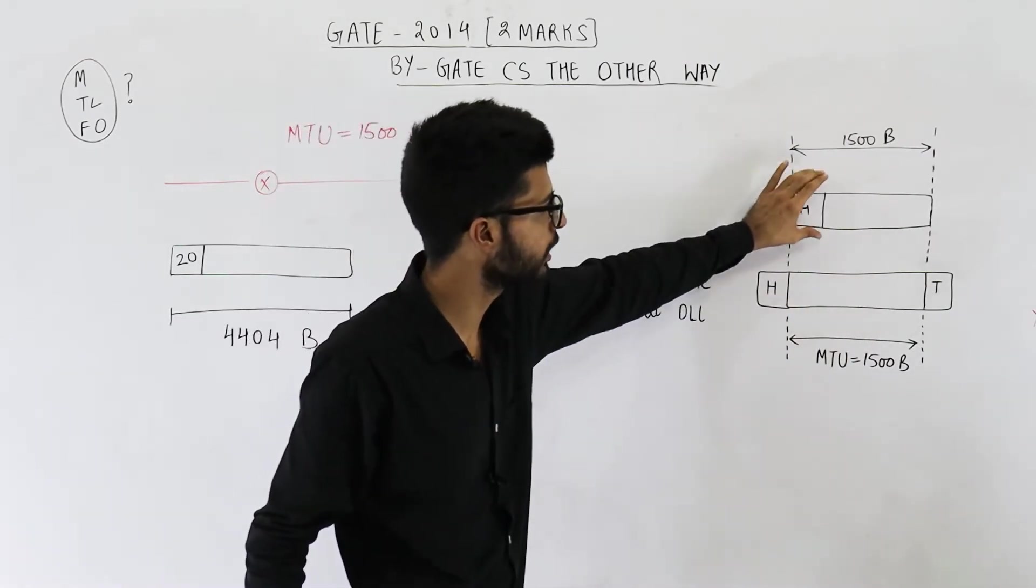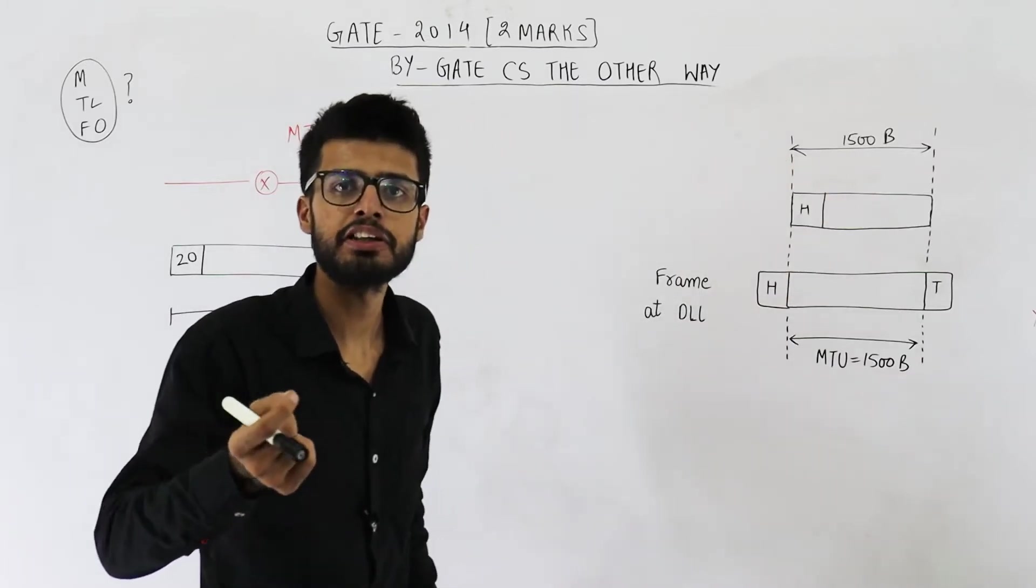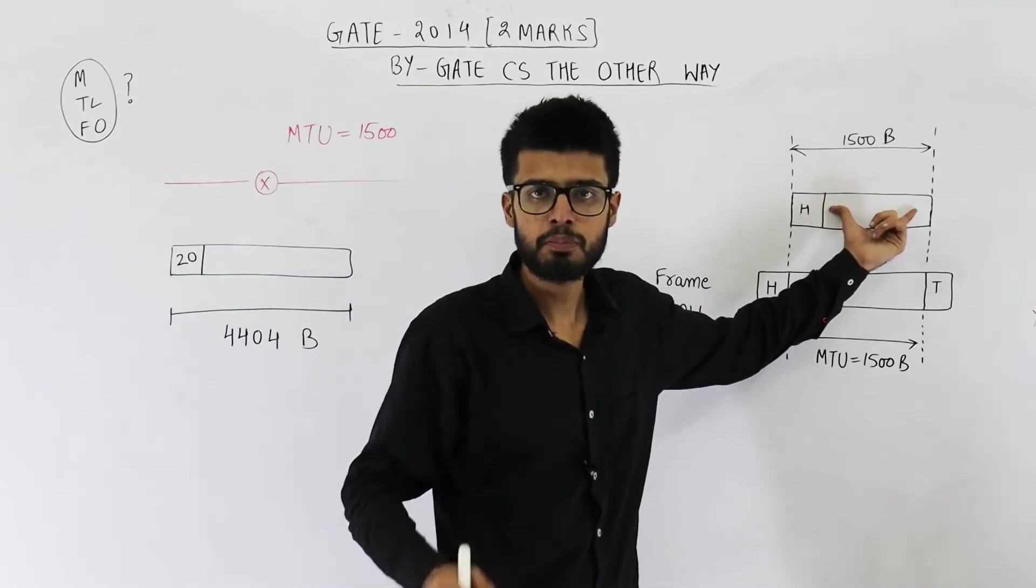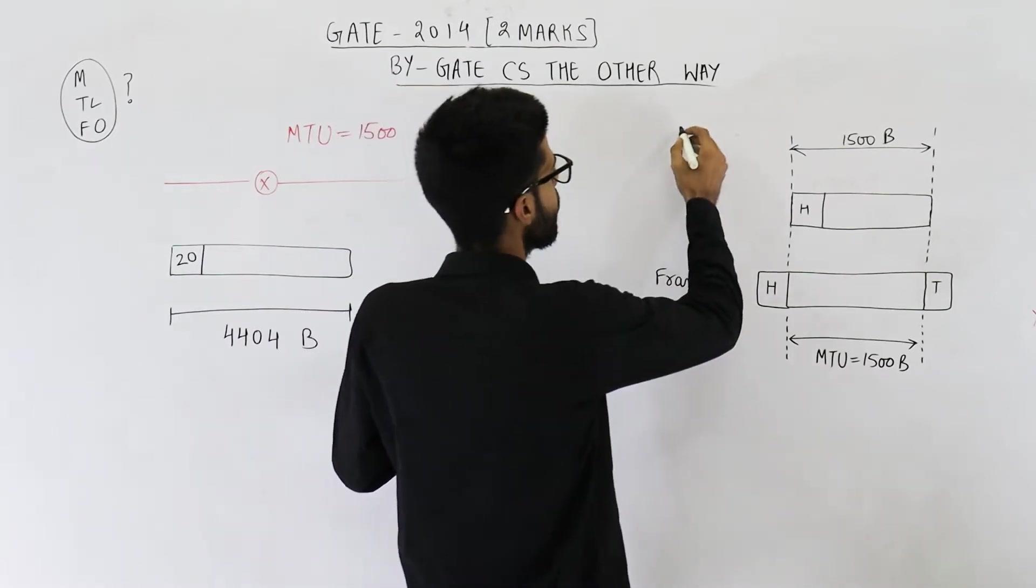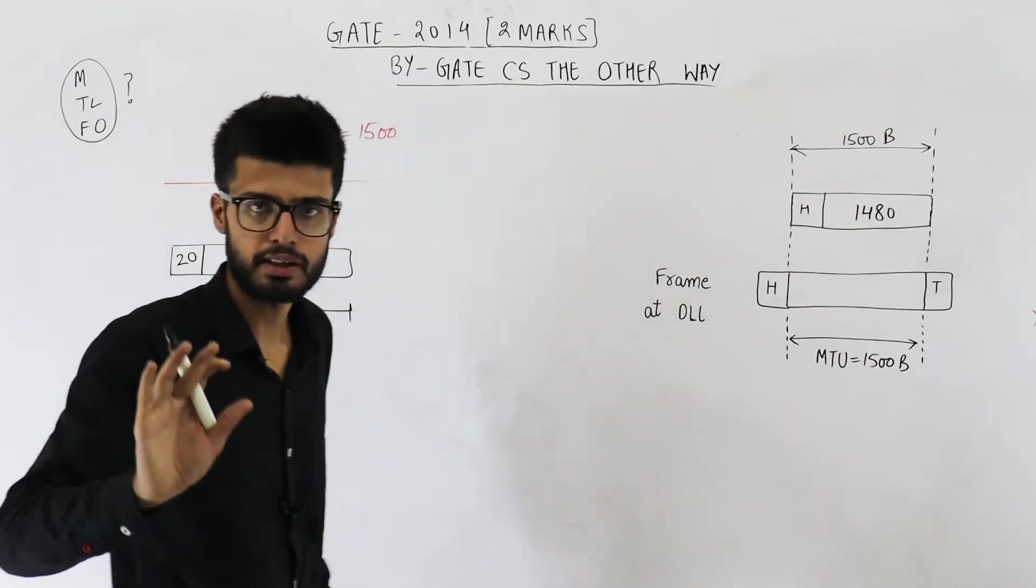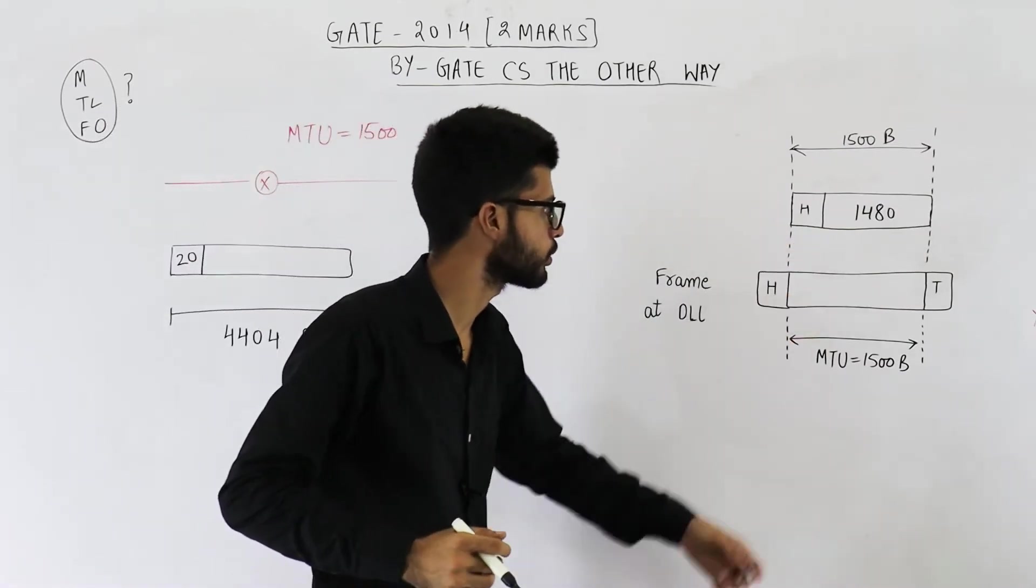Now we have got to know the limitation of entire IP packet. What is the limitation on data? Maximum data inside an IP packet can be 1480 bytes only. So data will be 1480 bytes assuming that header is of 20 bytes. It's given in the question that headers are of 20 bytes, the IP headers.